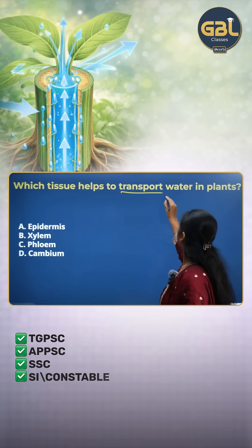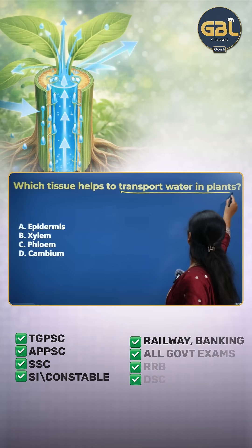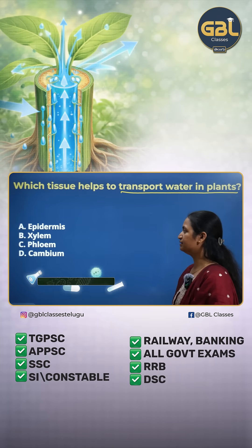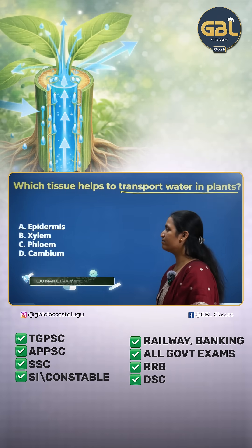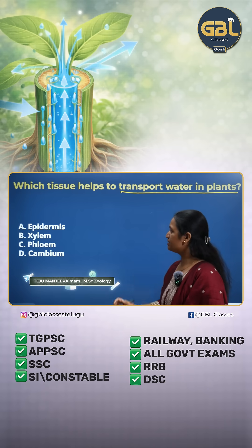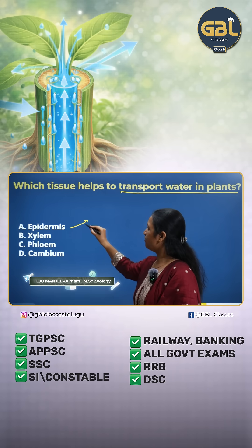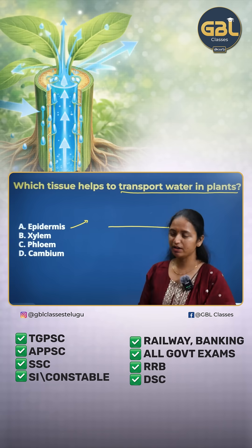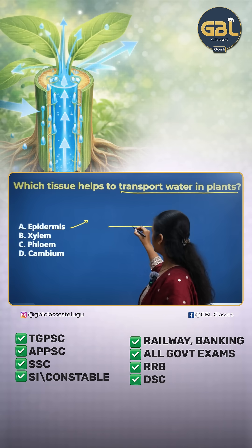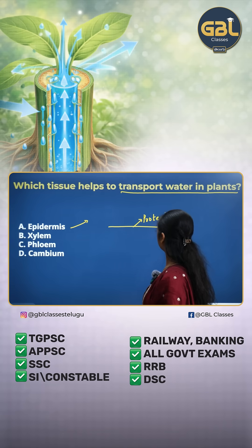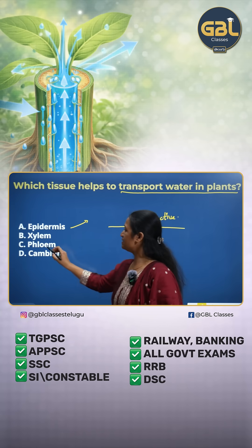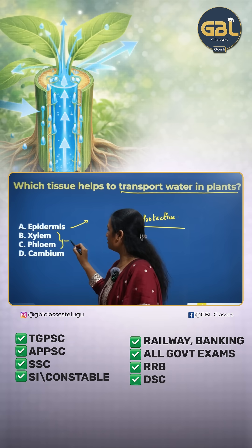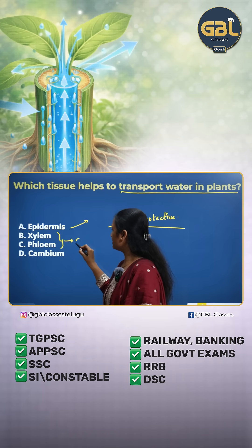Which tissue helps in transport of water in plants? The options are epidermis, xylem, phloem, and cambium. First, epidermis is the outermost layer of the leaf, which is protective in function, whereas xylem and phloem come under cambium tissue.